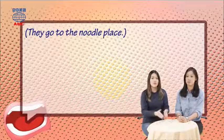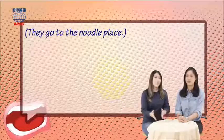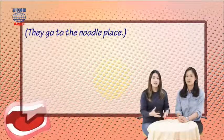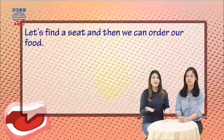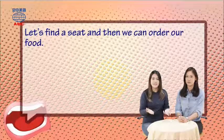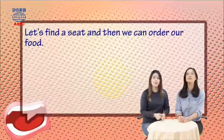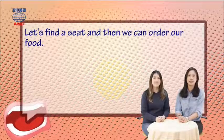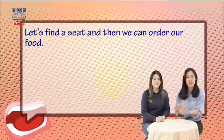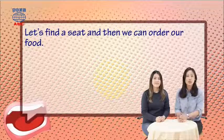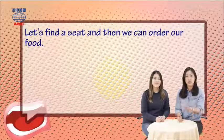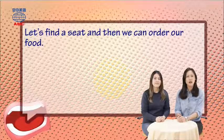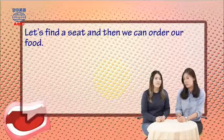All right, so then we see in the article, they have a scenario where they go to the noodle place. And then at the restaurant, Sarah says, let's find a seat, and then we can order our food. 他們去了這間麵食餐廳，Sarah就說，我們來找位置，然後點餐吧。I wonder what kind of noodles this new place serves.